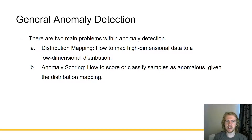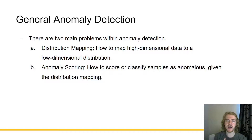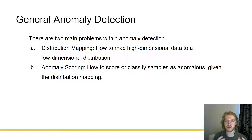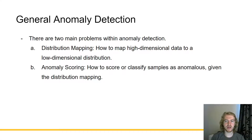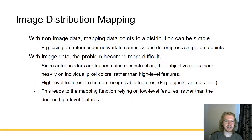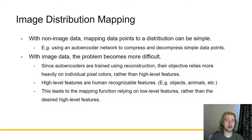So in general, there are two main problems with anomaly detection. The first would be distribution mapping — how do you map some high dimensional data to a low dimensional distribution that is going to be much easier to use and score as anomalies? And the second one is anomaly scoring — how do you score or classify samples as anomalous given the distribution mapping? Today we'll be talking about image anomaly detection, and so we'll start off with problem A, which is image distribution mapping.